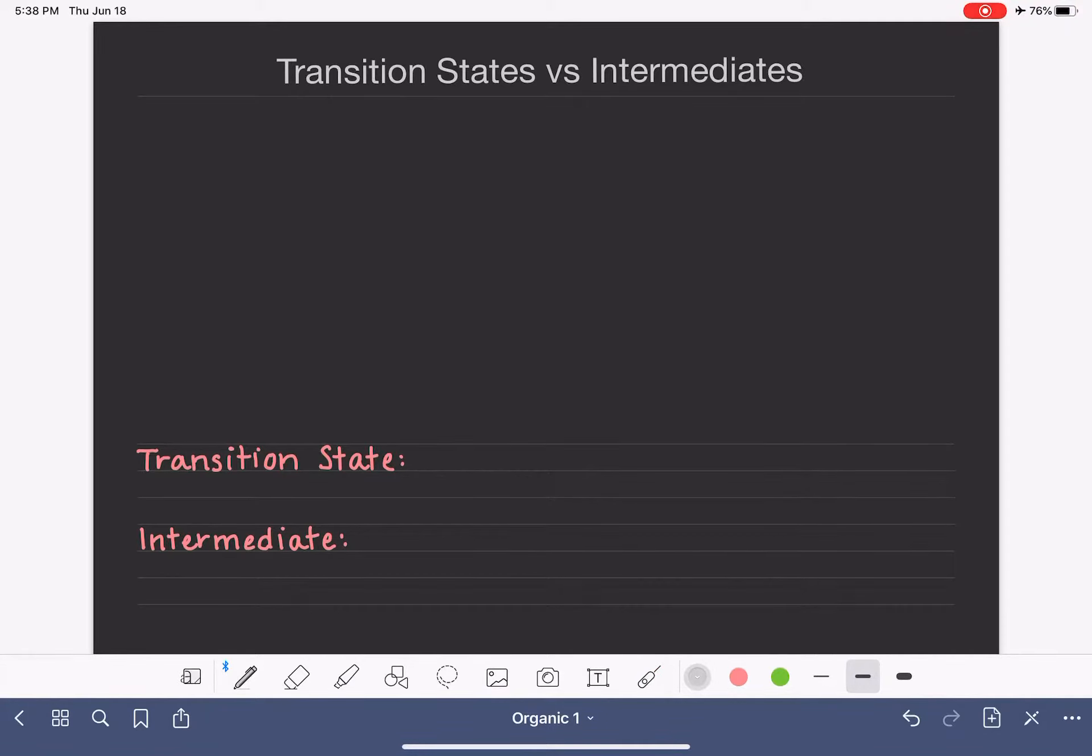To help explain transition states and intermediates, I'm going to draw an energy diagram. This would be a diagram for a chemical reaction where we are plotting the energy of the reactants and products versus time.